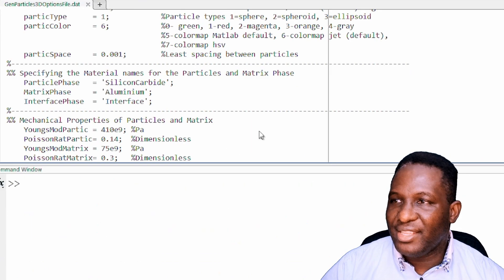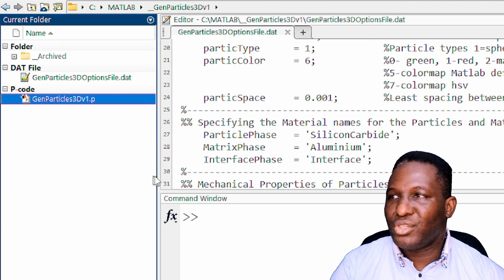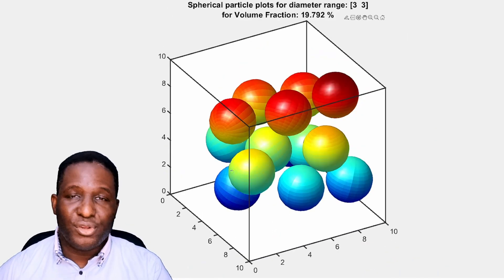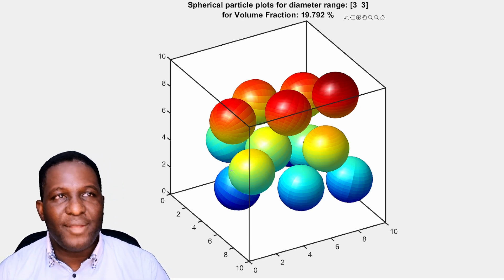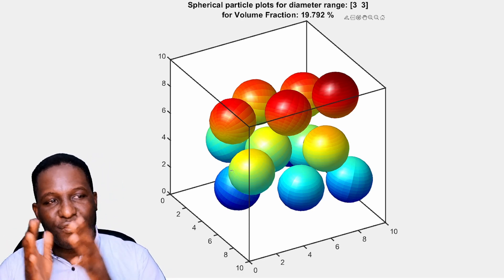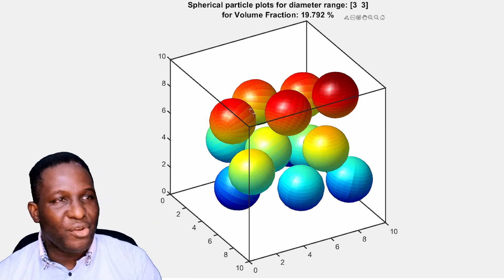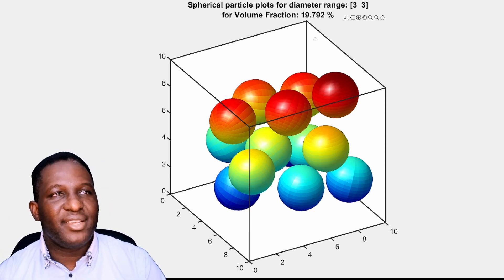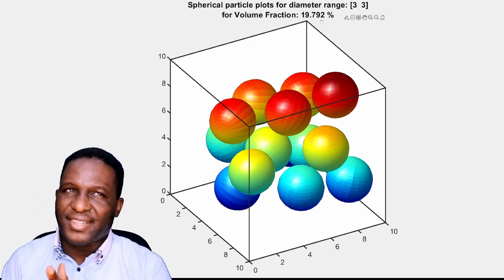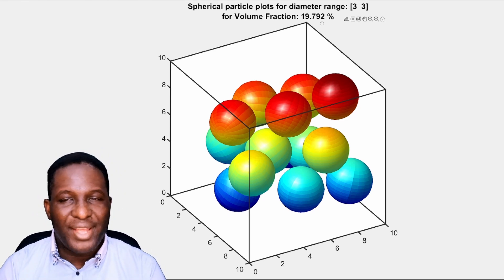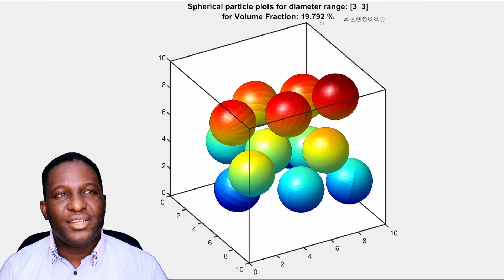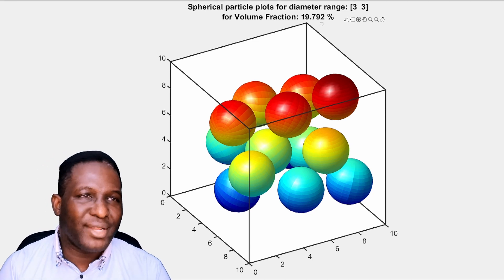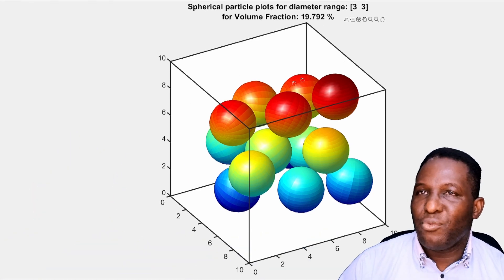Once all that is specified, all we need to do is right-click and tell MATLAB to run. Instantly it will run and show the geometry — remember this geometry is 10 × 10 × 10, however we are trimming it down to show the sides. All the particles are locked within the system. It generated a volume fraction of about 19.79%, which is approximately 20%. Even though we asked for exactly 20%, for this small-size RVE it can be quite difficult to achieve exactly that, but I'm happy with this result.